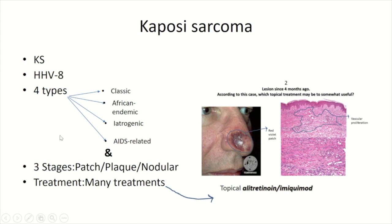I memorize Kaposi sarcoma as the disease of four and four: four types and three to four stages — patch, plaque, and nodular stage, with some textbooks also including a tumoral stage. The four types are classic, African endemic, iatrogenic, and AIDS-related. All subtypes are caused by HHV-8, human herpesvirus 8.